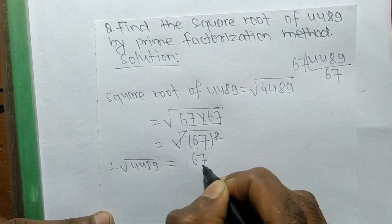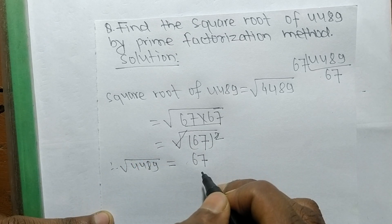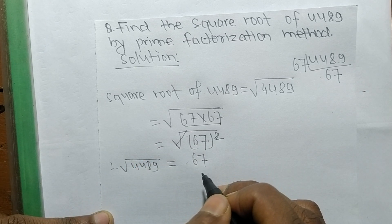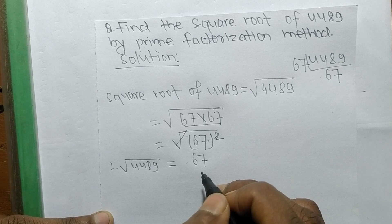The square root of 4489 is equal to 67. So this much for today.